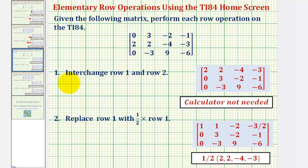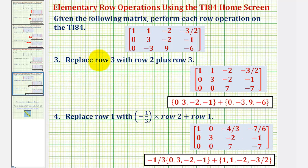We'll go over how to perform the following row operations. Number one, interchange row one and row two. Number two, replace row one with one-half times row one. Three, replace row three with row two plus row three. And finally, replace row one with negative one-third times row two plus row one.